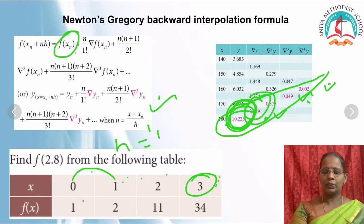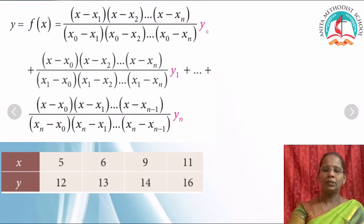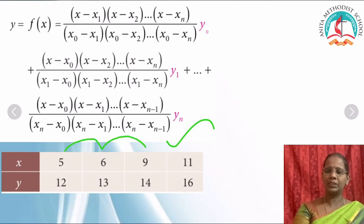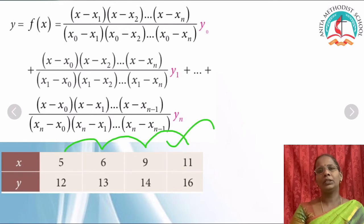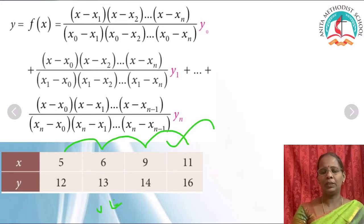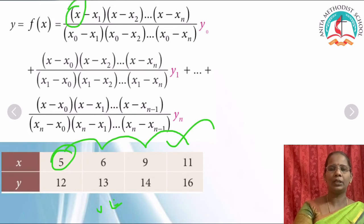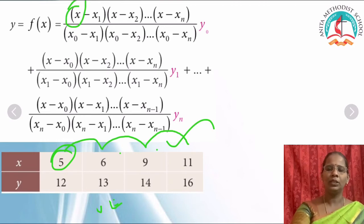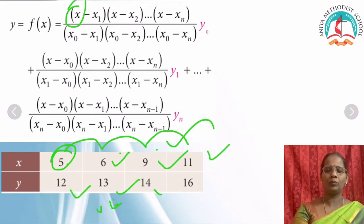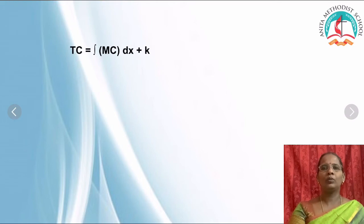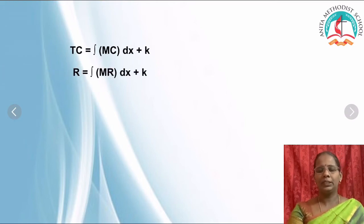Lagrange's interpolation formula can be used for both equal and unequal intervals. For example, intervals 5, 6, 9, 11 are unequal — you can still apply Lagrange's formula here. The x in the formula is the value you want to find, e.g., f(42), f(8), or f(7). Use x₀, x₁, x₂, x₃ and y₀, y₁, y₂, y₃ and apply the formula to get the answer.